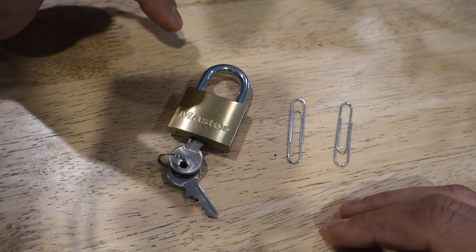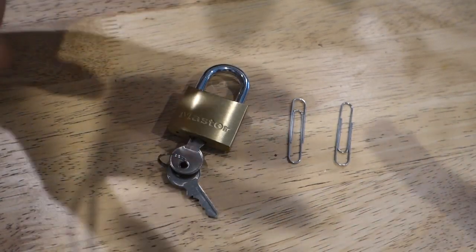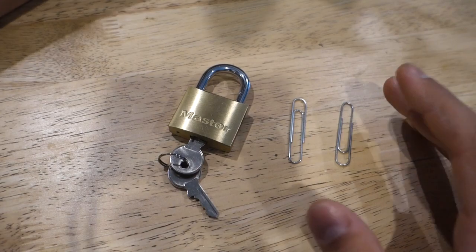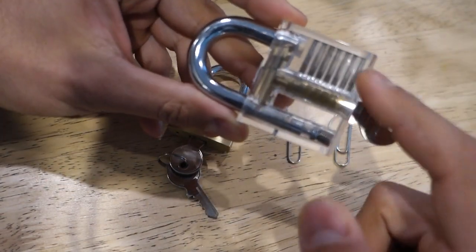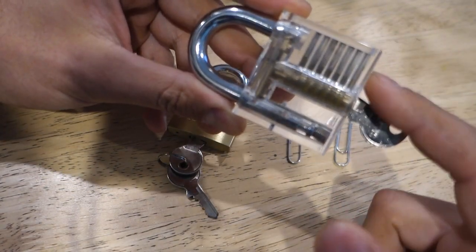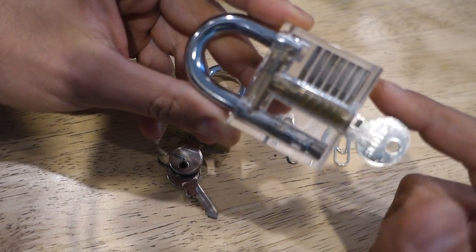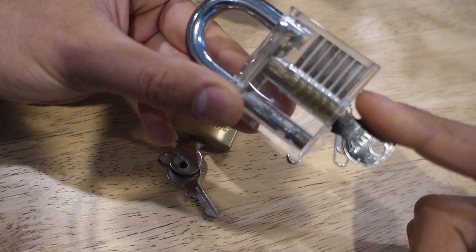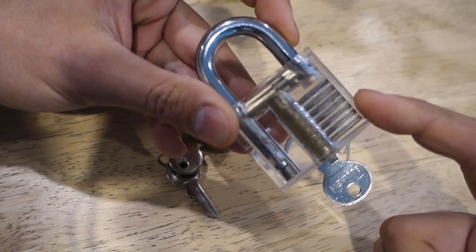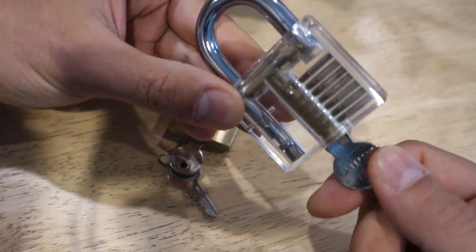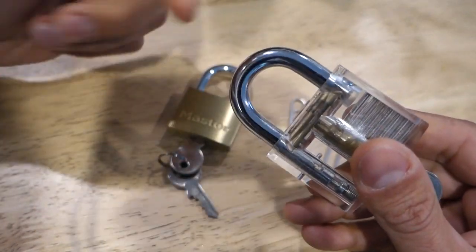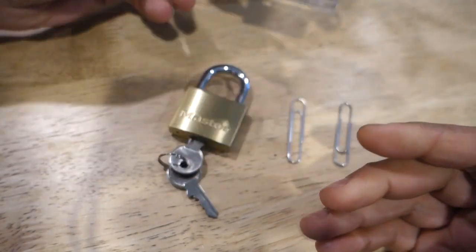What I did notice however was in the comment section there was a lot of constructive criticism around the padlock that I picked. So what I used was this clear transparent padlock right here. The reason why this one is clear is so that you can see what's going on inside as you pick it and that will help you develop your lock picking skills. A lot of people said this is a cheap lock, very easy to pick especially using a paperclip.